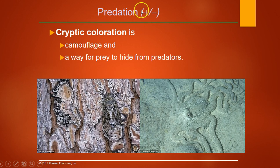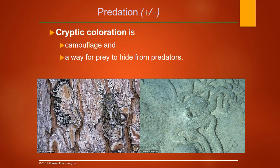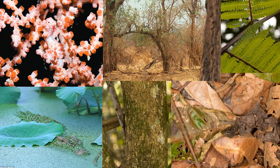In predation, one species benefits — the predator — while the prey does not. When invasive species predate upon native species, it harms them. A key way prey reduce predation is cryptic coloration, where they blend in with their environment. We see this in a cicada and an octopus. There's also the mimic octopus in Indonesia — it can lay flat like a flounder, and hide all but two arms to resemble a venomous sea snake. I'll have students pause to find species with cryptic coloration in the images.